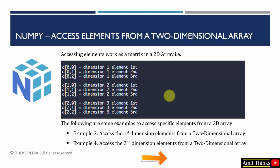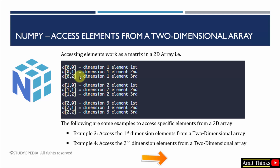Now we will see how to access elements from a two-dimensional array. The concept is different — a two-dimensional array works like a matrix. If you want to get the first element of the first dimension, use index [0,0]. For a 3x3 matrix, for the last element, you need to use indexes [2,2] — that is row, column — meaning row 3, column 3. This also works with negative index -1. If you want the first element of dimension 2, you need to mention [1,0] — that is second row and first column.